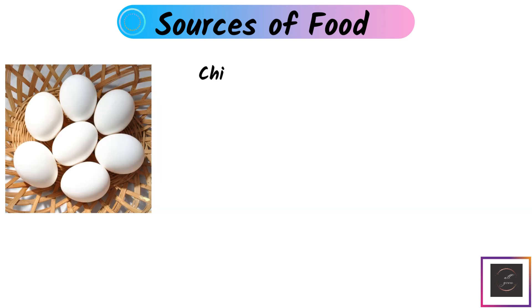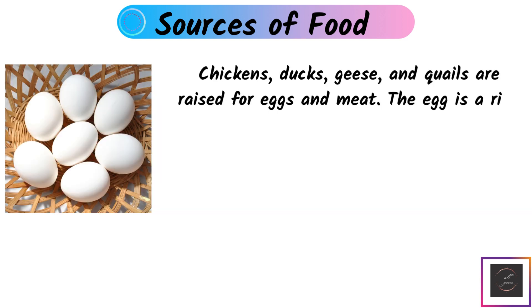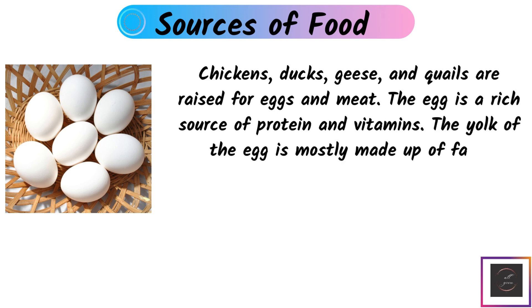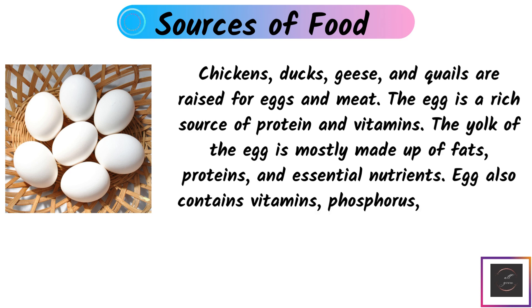Eggs: Chickens, ducks, geese, and quails are raised for eggs and meat. The egg is a rich source of protein and vitamins. The yolk of the egg is mostly made up of fat, protein, and essential nutrients. The egg also contains vitamins, phosphorus, calcium, and iron.